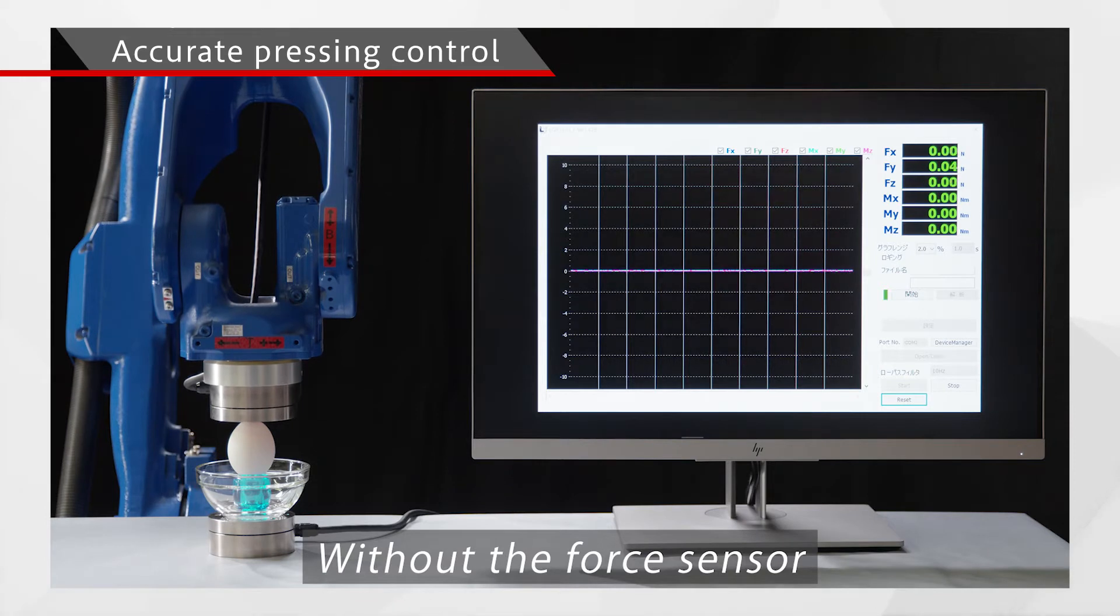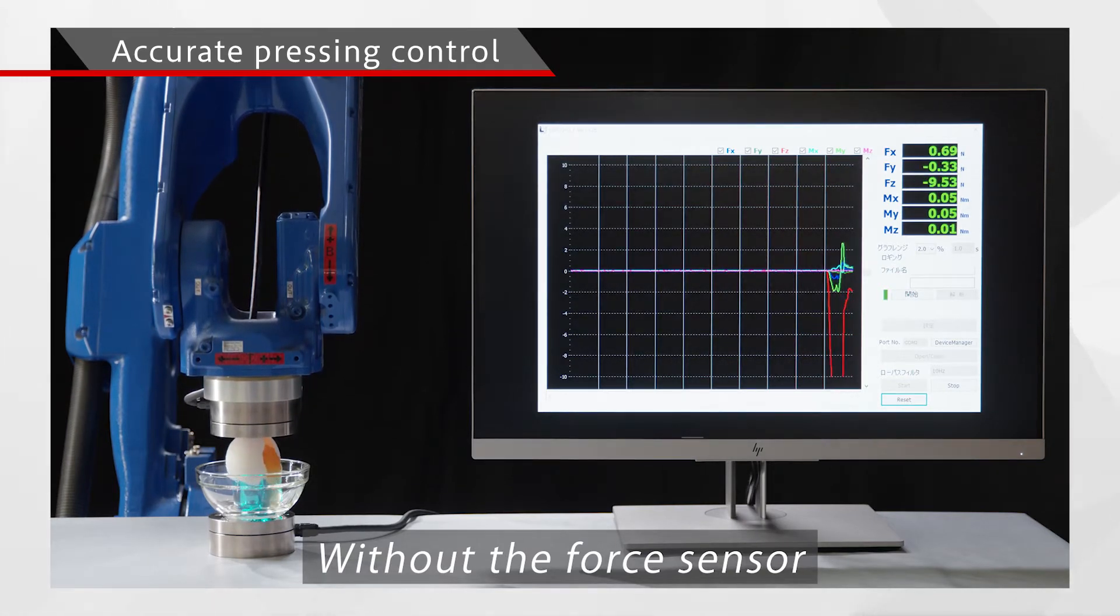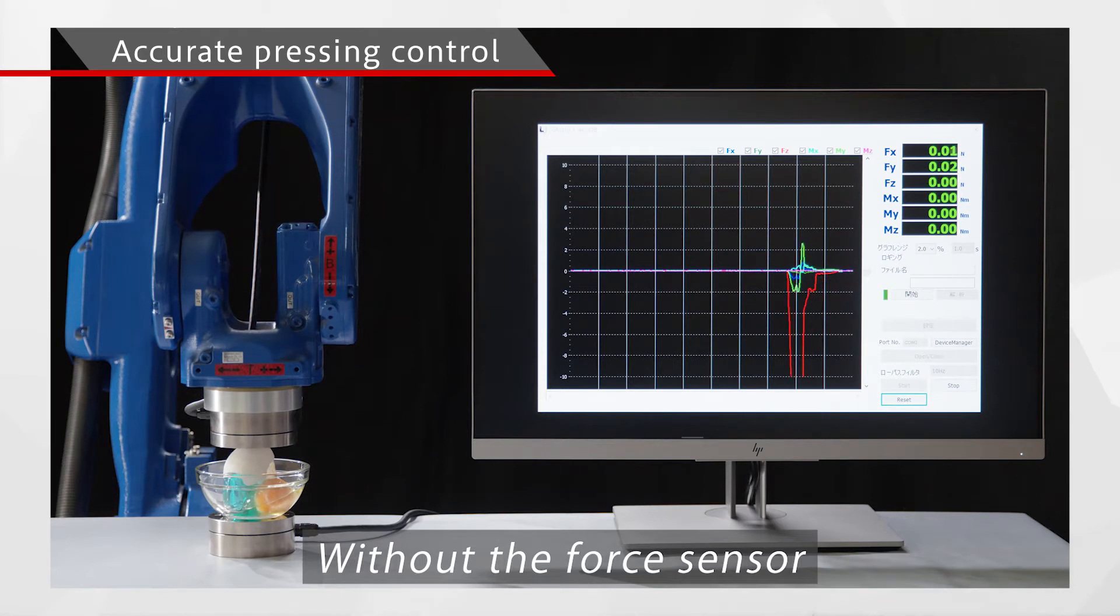Conventional robot control involves moving the arm according to input position and tool coordinate data, which makes force control difficult.